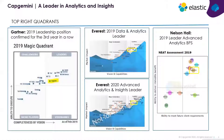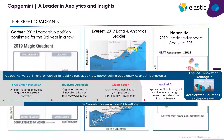Some more data points about the Insights and Data global business line: Gartner's 2019 Magic Quadrant places Capgemini as a leader for the third year in a row. The Everest ratings also name us a leader in data and analytics both in 2019 and 2020, and NelsonHall recognizes Capgemini as a leader in the advanced analytics space.